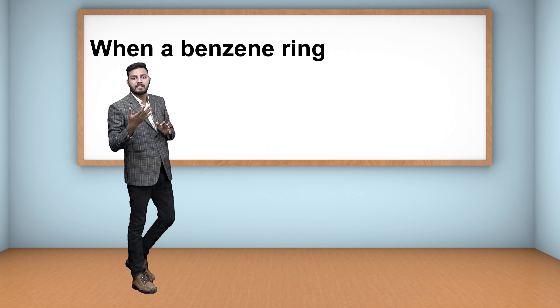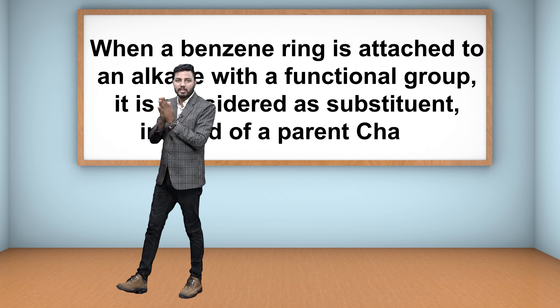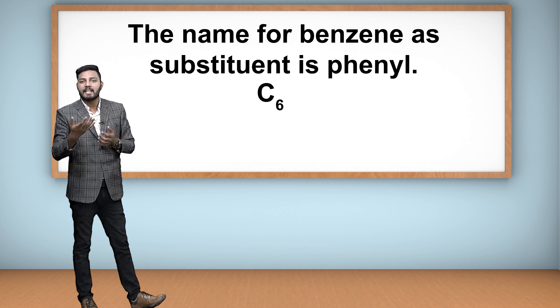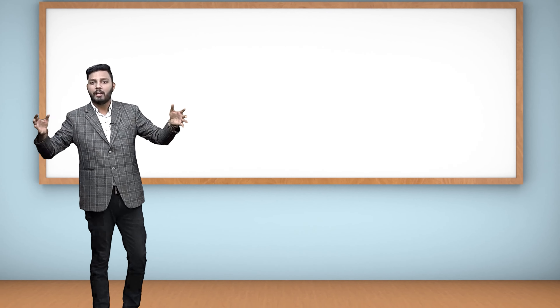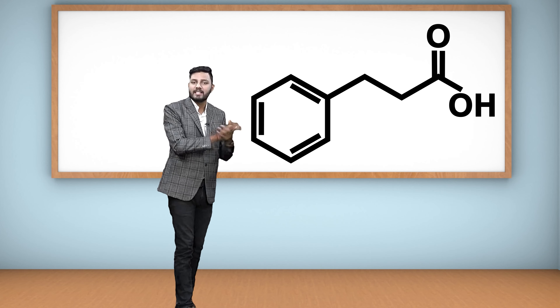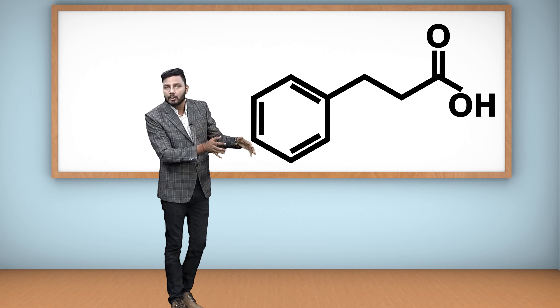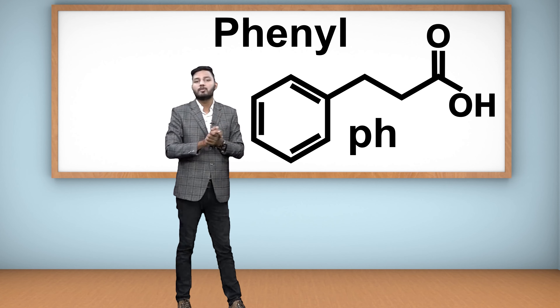When a benzene ring is attached to an alkane that has a functional group, benzene is considered a substituent rather than the parent chain. The name for benzene as a substituent is phenyl, represented as C6H5 and also abbreviated as Ph. This means if we have a carbon chain with a functional group like COOH and benzene is attached to it, benzene is written as a substituent called phenyl. Now instead of naming molecules from structures, we will draw structures from names.